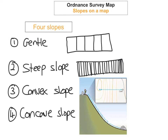The fourth type is the concave slope. With this one, the contour lines are very close together at the top — there's a steep drop straight away — and then at the bottom it becomes flat, so the contour lines spread out because the slope becomes much more gentle.